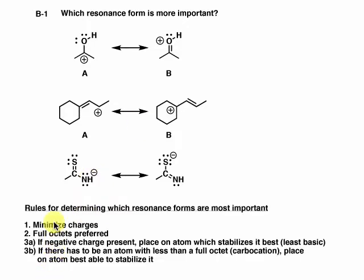First, we want to minimize charges as much as possible — the less charge there is, the better. Secondly, we prefer to have full octets rather than an atom with an empty octet. And thirdly, if there's a negative charge present, we put that negative charge on the atom which stabilizes it best — in other words, the least basic atom.